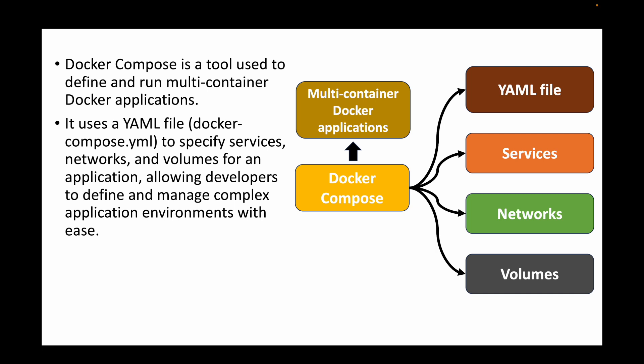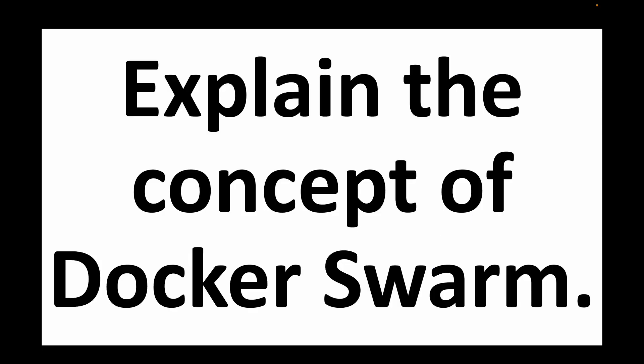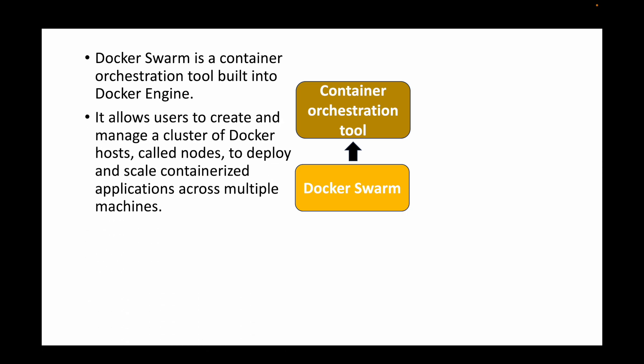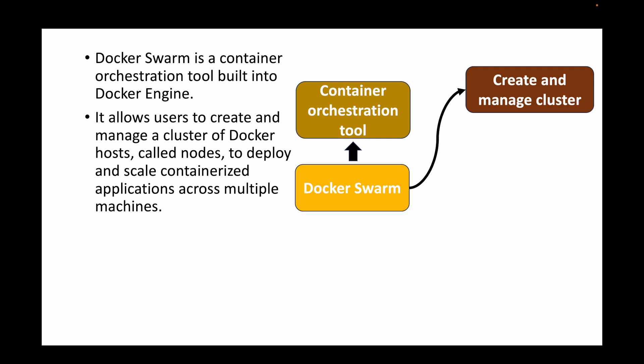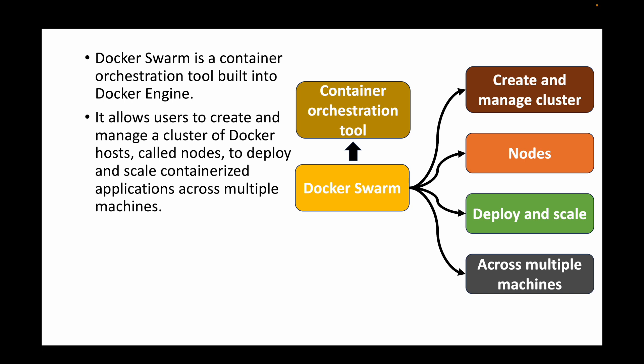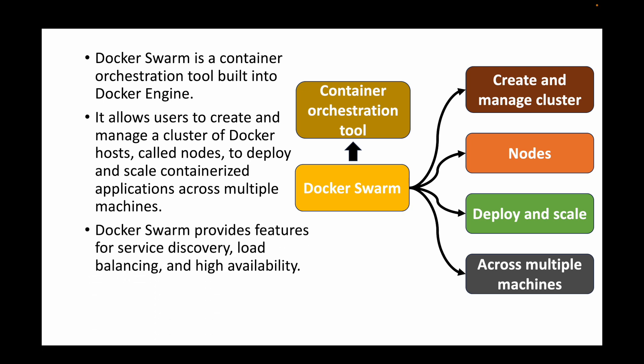The next question is: explain the concept of Docker Swarm. Docker Swarm is a container orchestration tool provided by the Docker engine. Whenever you want to create a cluster of multiple machines, you use Docker Swarm. It allows you to create and manage a cluster of Docker hosts — called nodes — and deploy and scale containerized applications across multiple machines. Docker Swarm provides features like service discovery, load balancing, and high availability.